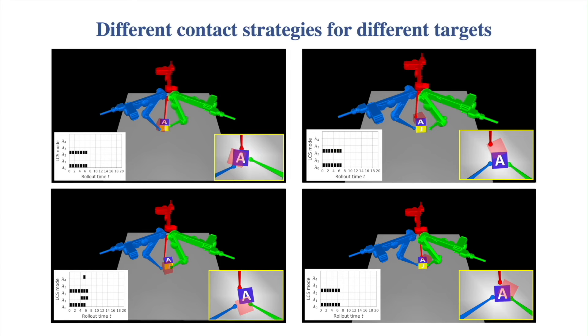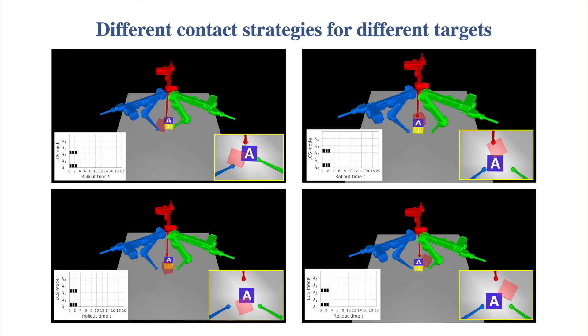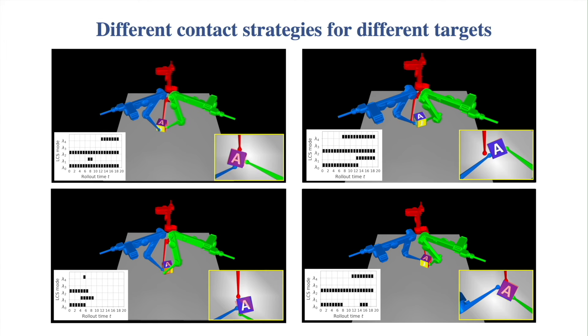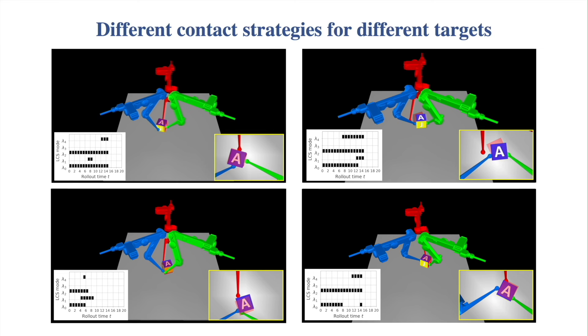Most notably, as shown here, for different targets, the learned reduced-order LCS can produce different contact strategies such as separate, slip, stick, and different decisions about which finger touches which face of the cube.